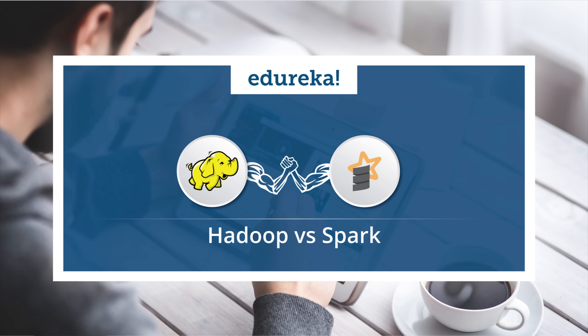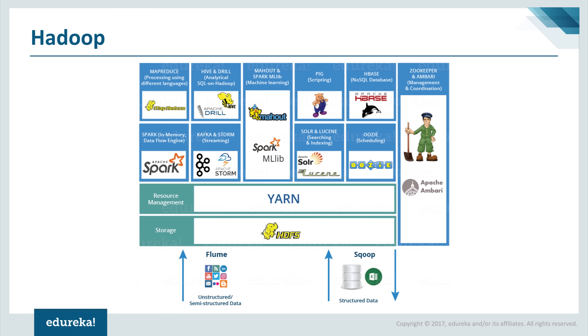Apache Spark and Hadoop are two of the most prominent big data frameworks, and people often compare these two technologies. That is exactly what we're going to do in this video — compare these two big data frameworks based on different parameters. But first, it is important to get an overview of what Hadoop and Apache Spark are.